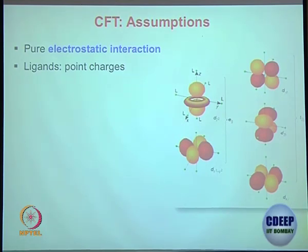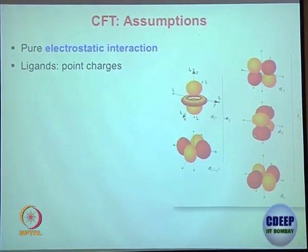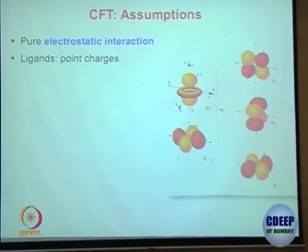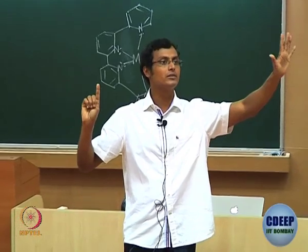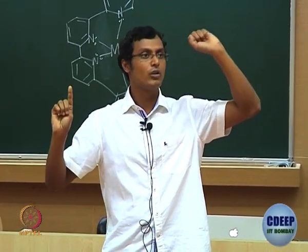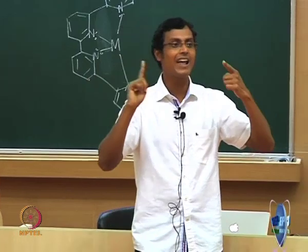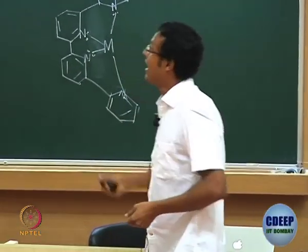For crystal field theory, first we have to look at the orbitals. This is something you have to have very clear in your mind — what we are talking about are the atomic orbitals, mainly the 5 d orbitals. We have 5 d orbitals — how they are oriented, along the axis, where they are.